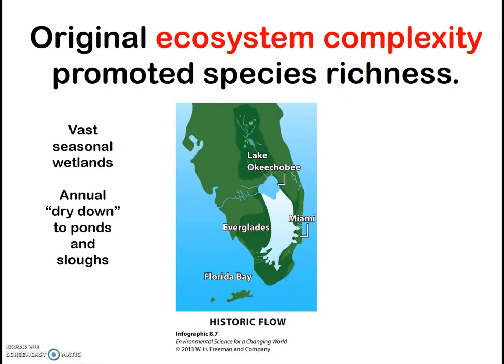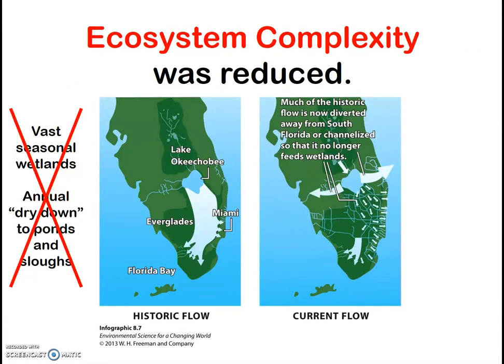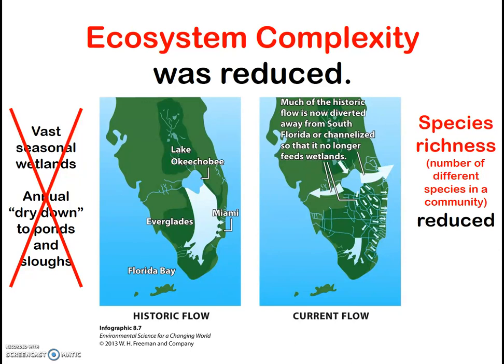The original Everglades ecosystem had a high level of ecosystem complexity. The channelization of water flow and the subsequent drying out of much of the region decreased the structural complexity of this ecosystem. Where there had once been thousands of different pools of varied connectivity, depth, and velocity, now there was either dry land or deep, fast channels. Additionally, regions on the edges of ecosystems typically have a high level of species diversity because they have members of both communities plus those unique to the edge. The streamlining of water flow simplified the vegetative structure, provided less edge effect, fewer potential ecological niches, and the result was less species richness in the ecosystem.